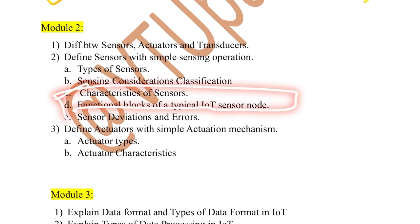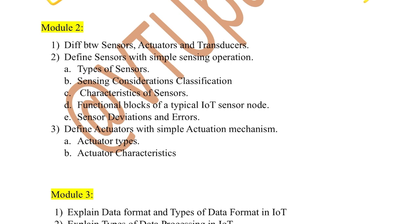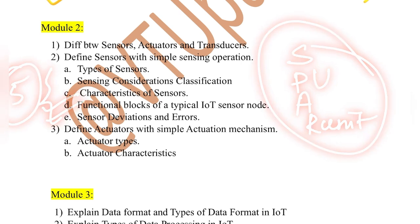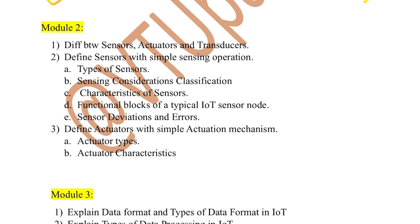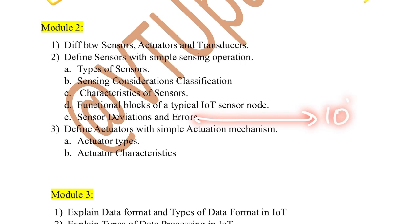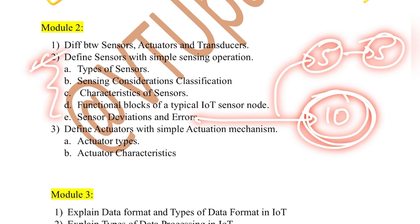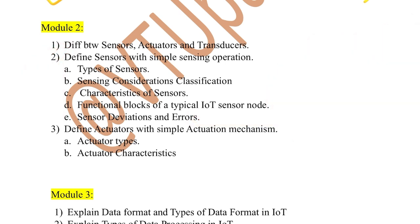Functional blocks of a typical IoT sensor node — there is a sensor, then processing unit, radio unit, and so on. It's an easy question. All these questions are five-mark questions with a simple diagram and explanation. Then we have sensor deviations and errors — there are nearly 10 types. Out of these, any five could be asked for five marks. Make sure you do not miss out the second question as it majorly comprises the large chunk of the second module.